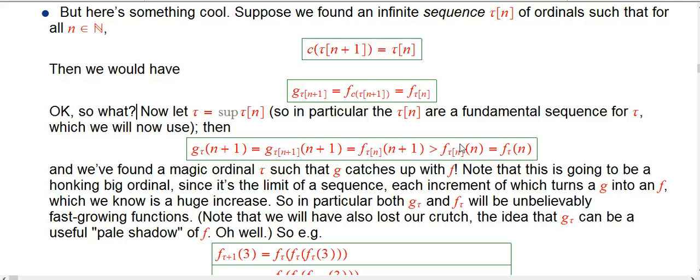So why is that useful? Well now, let tau be the sup of all those guys. Let it be the limit of all those guys as an ordinal. Essentially, whenever you have an increasing sequence of ordinals, you can always think about the ordinal at those limit too. In particular, the tau of n are exactly just a fundamental sequence for this master new ordinal tau.